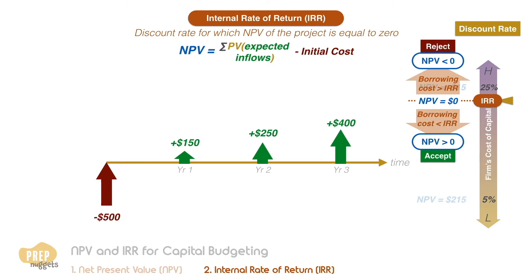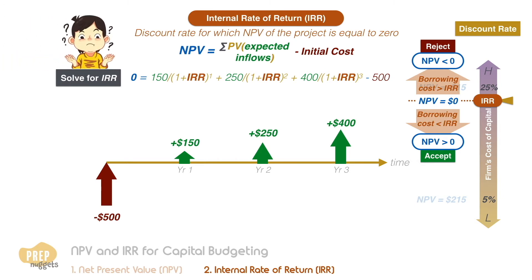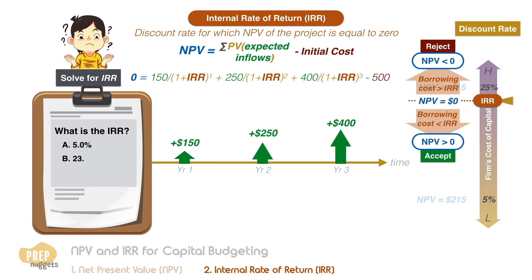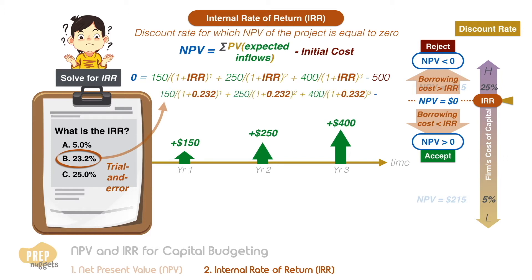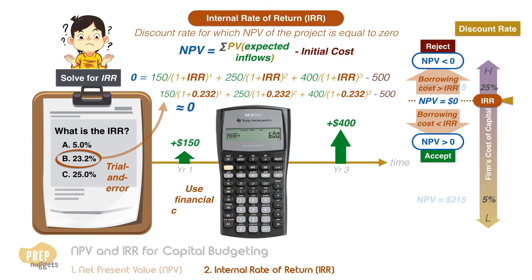So how do we calculate the IRR? Simply equate the NPV to zero and solve for the IRR. Not so simple, right? In the exam, you have three choices. You could use trial and error and work out which ones give you an NPV of zero, or you could use your financial calculator, which we shall illustrate in the following exercise.